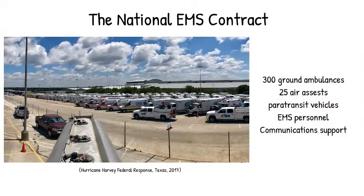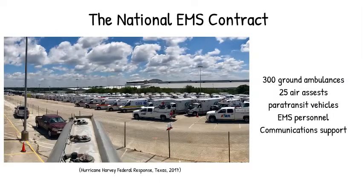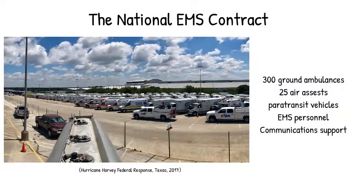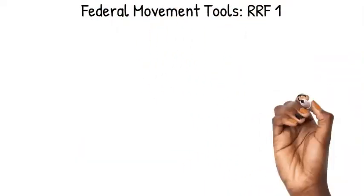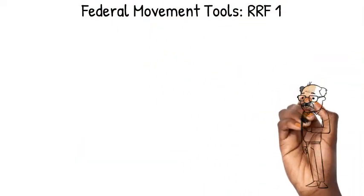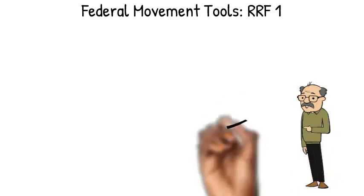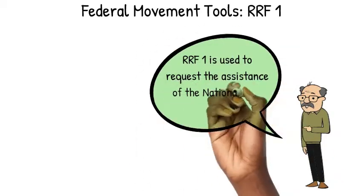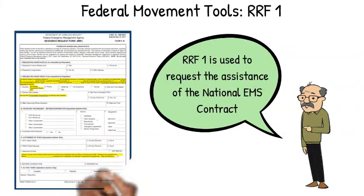One thing we can order from the federal government is the National EMS Contract. This includes 300 ground ambulances, 25 air resources (both fixed-wing and rotary-wing), paratransit vehicles, EMS personnel, and communication support — all available essentially at the flip of a switch.